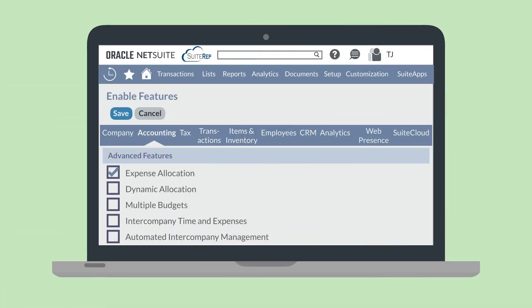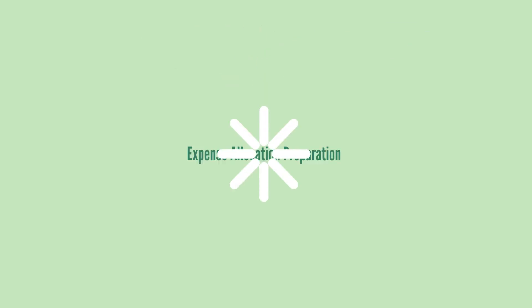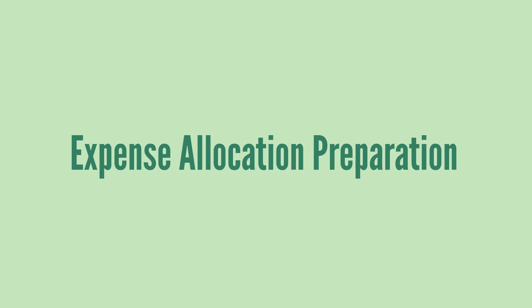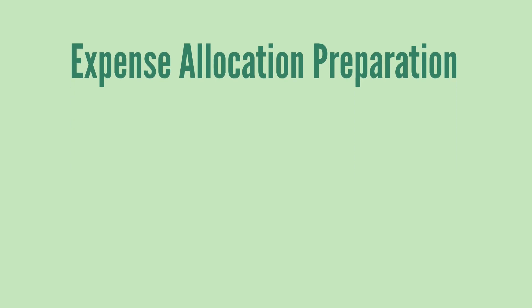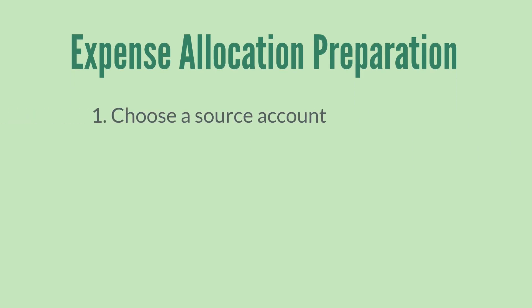You can turn on this feature under the Advanced Features section of the Accounting tab in Enable Features. Before you start creating a new expense allocation schedule, you'll need to know some details about your allocation. First, you need to know which account or accounts the expense is currently hitting — this account is the source account.